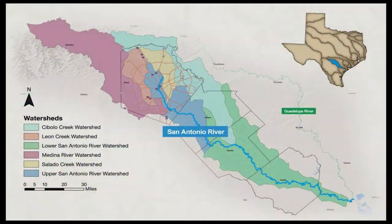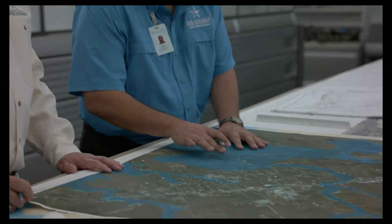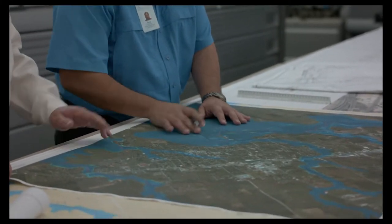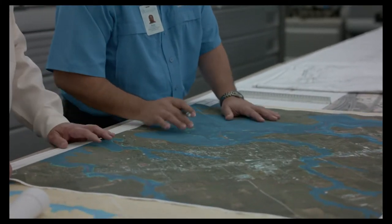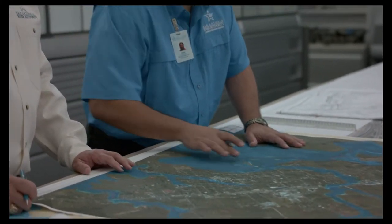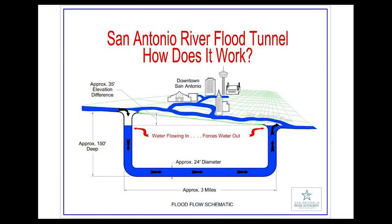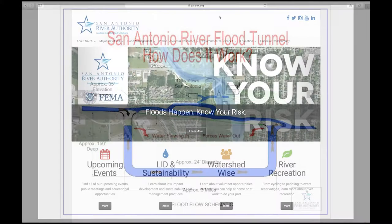SARA works with leaders in Bexar, Wilson, Carnes, and Goliad counties to address flooding on a regional basis. SARA is developing hydrologic and hydraulic models to update floodplain maps throughout the basin, to improve flood warning systems, and to help identify and prioritize the most beneficial capital projects to address flooding issues.